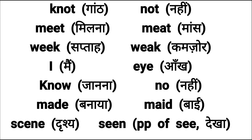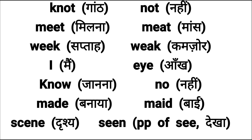Ab kuch aur examples hai. They have again the same pronunciation but different spellings and meanings. 'Knot' — K-N-O-T — hota hai gaat, jaise rassi ki gaat baandte hai. Aur 'not' — N-O-T — mani nahi. Then 'meet' and 'meat' — same pronunciation but different spellings and meanings.